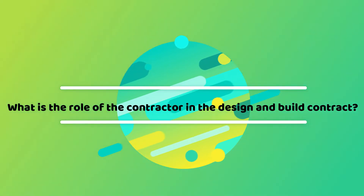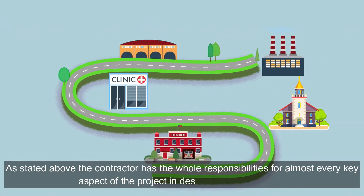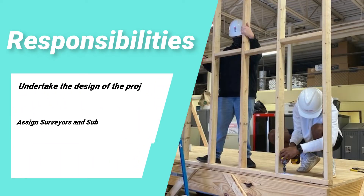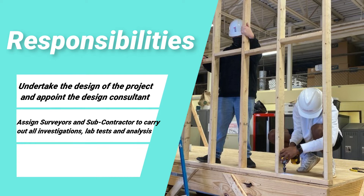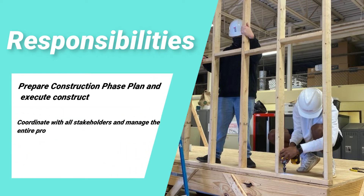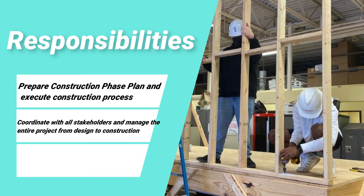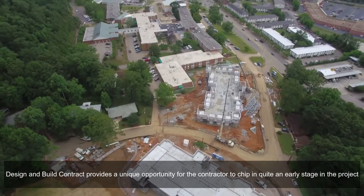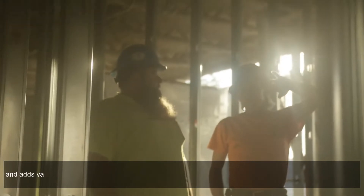What is the role of the contractor in the design and build contract? The contractor has the whole responsibility for almost every key aspect of the project. Key responsibilities include: undertaking the design of the project and appointing the design consultant, surveyors, and subcontractors to carry out all investigations, lab tests, and analysis; preparing the construction phase plan and executing the construction process; and coordinating with all stakeholders and managing the entire project from design to construction.